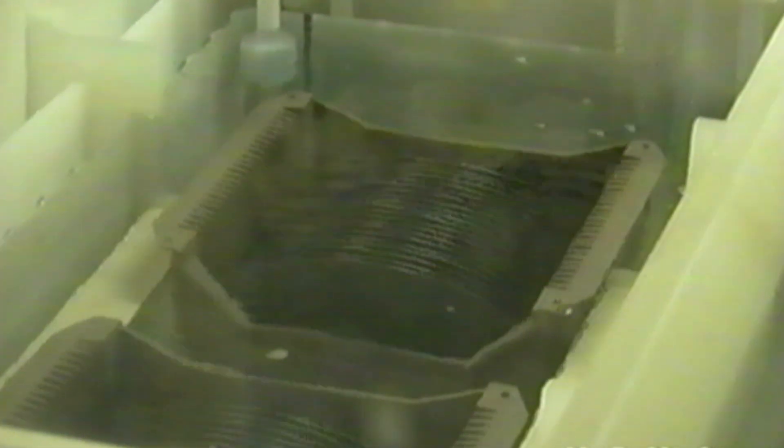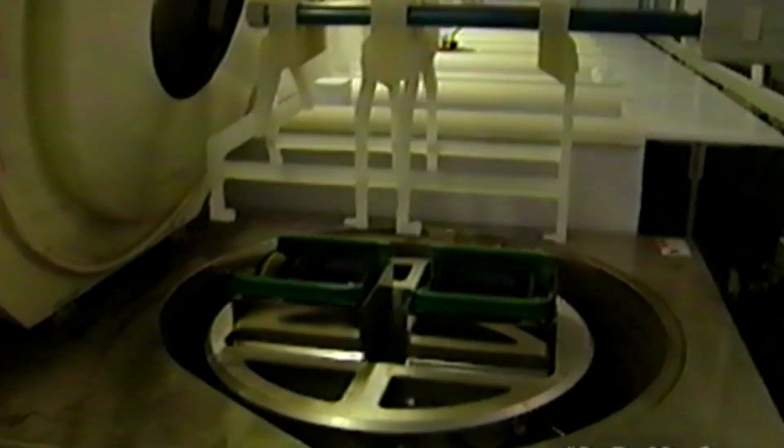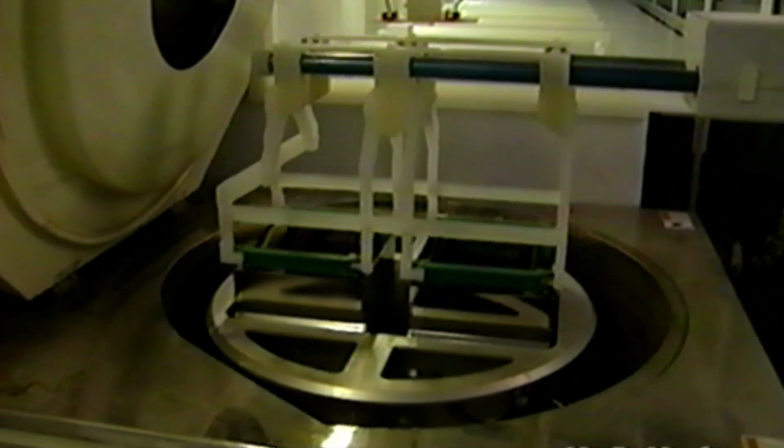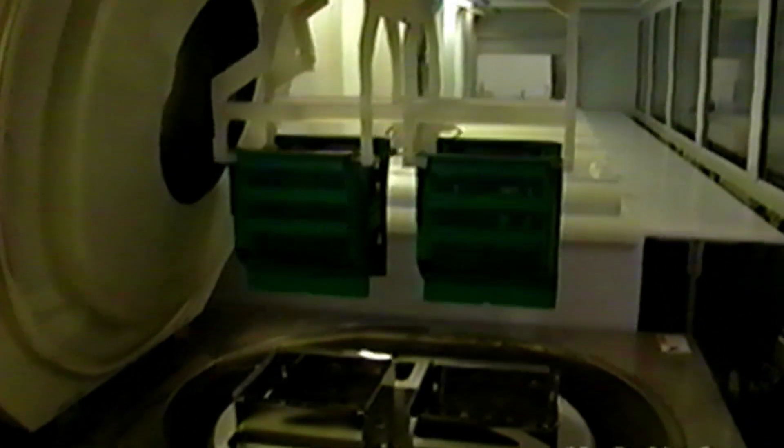After lapping, the slices are cleaned more thoroughly using a conventional wet bench, which has been optimized to remove both particles and metallic contamination. From the wet bench, wafers proceed to the next phase of manufacturing, etching.